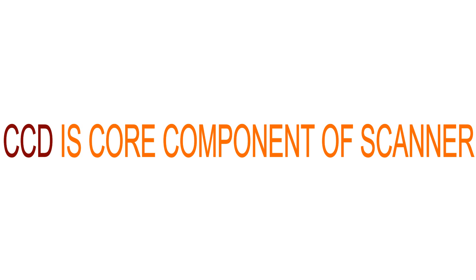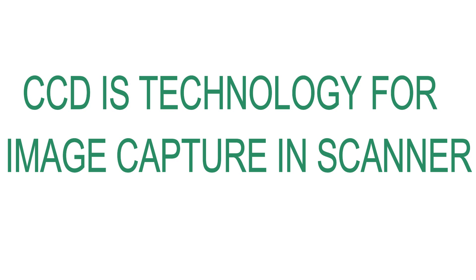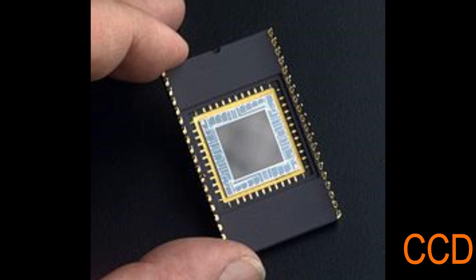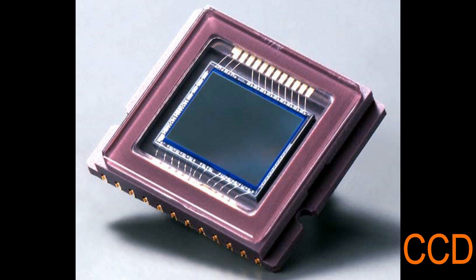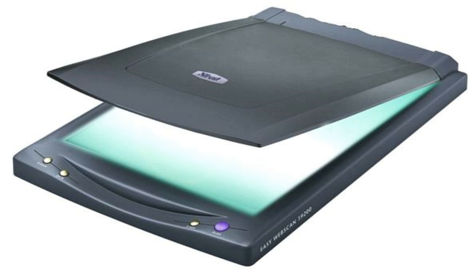The core component of a scanner is the CCD array, also known as the charge-coupled device array. The CCD is the most common technology for image capture in a scanner. It is a collection of tiny light-sensitive diodes which convert photons, or light, into electrical charges, which are used to convert a document into digital format. The image of the document reaches the CCD array through a series of mirrors, filters, and lenses.